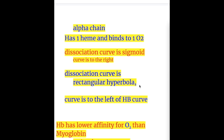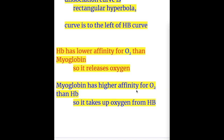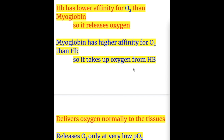The dissociation curve of hemoglobin is a sigmoid shape curve and is to the right. The dissociation curve of myoglobin is a rectangular hyperbola and its curve is to the left of the hemoglobin curve. Hemoglobin has lower affinity for oxygen than myoglobin, so it releases oxygen normally when the tissues require it.